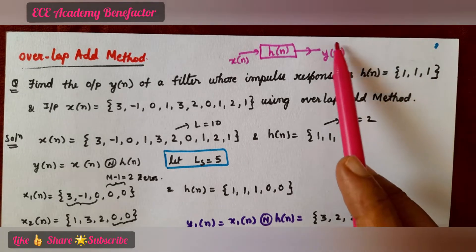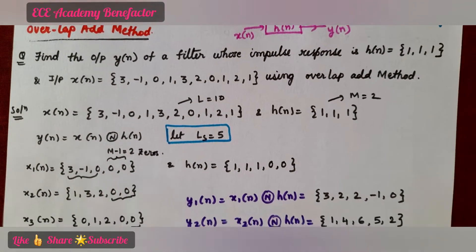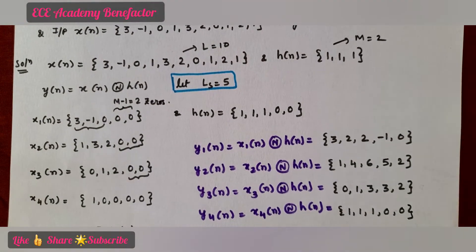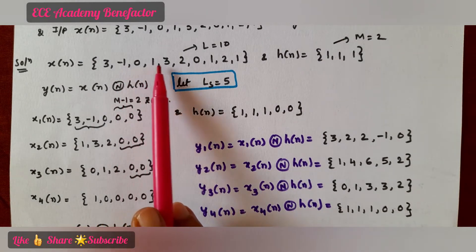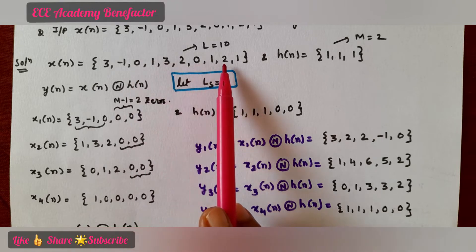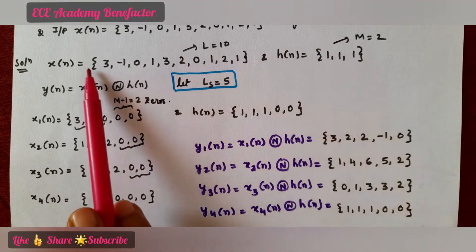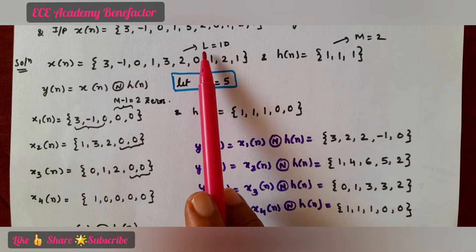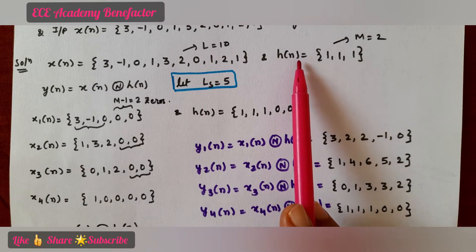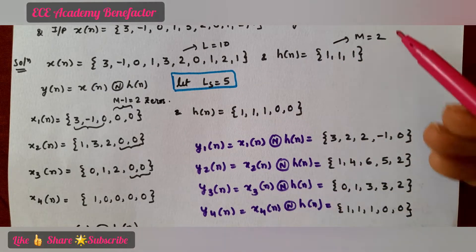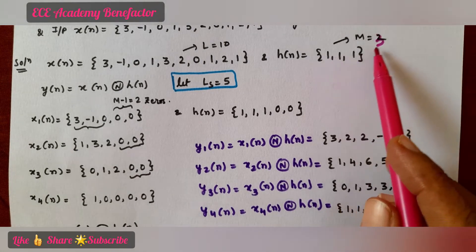You have to find the output response y(n) using the overlap add method. First, write the given sequences. x(n) = {3, -1, 0, 1, 3, 2, 0, 1, 2, 1} and h(n) = {1, 1, 1}. The length of x(n) is L = 10, and the length of h(n) is M = 3.